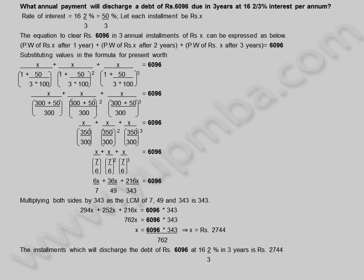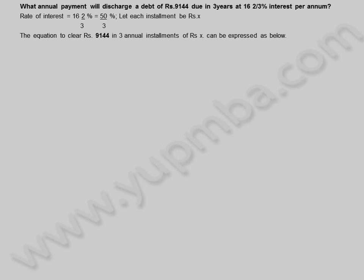Let us see another example. What annual payment will discharge a debt of 9144 rupees due in 3 years at 16 and 2 by 3 percentage interest per annum? Rate of interest is equal to 16 and 2 by 3 percentage, which equals 50 by 3 percentage. Let each installment be X rupees. The equation to clear 9144 rupees in 3 annual installments of X rupees can be expressed as below. Present worth of X rupees after 1 year, plus present worth after 2 years, plus present worth after 3 years is equal to 9144.